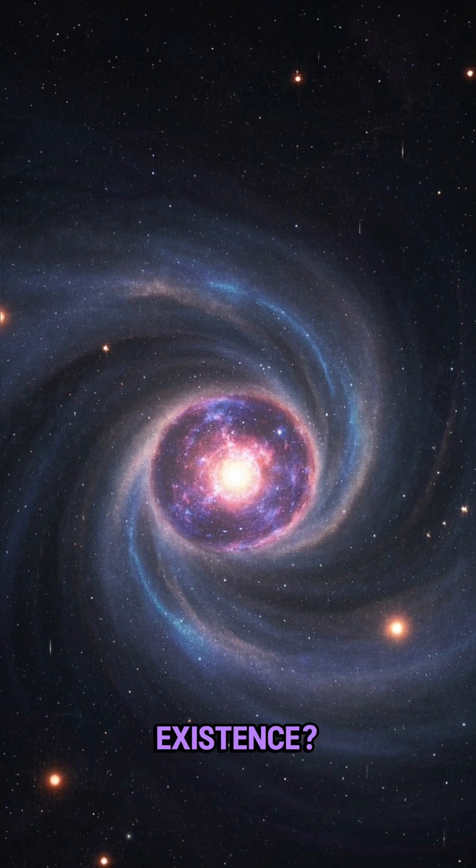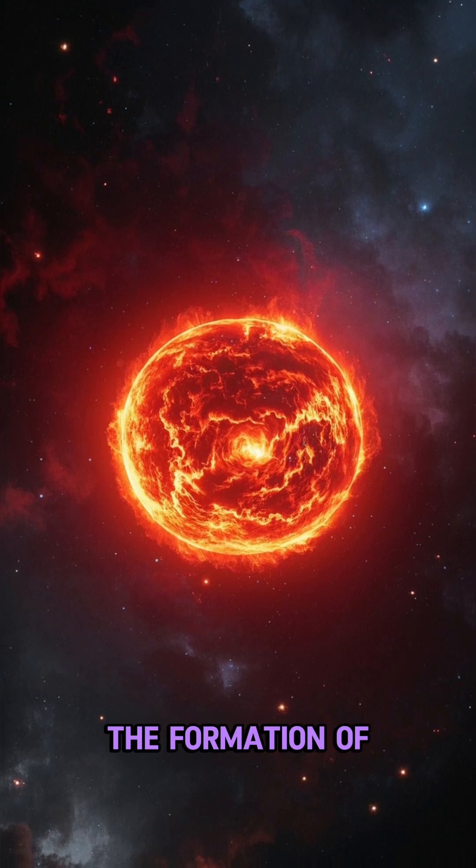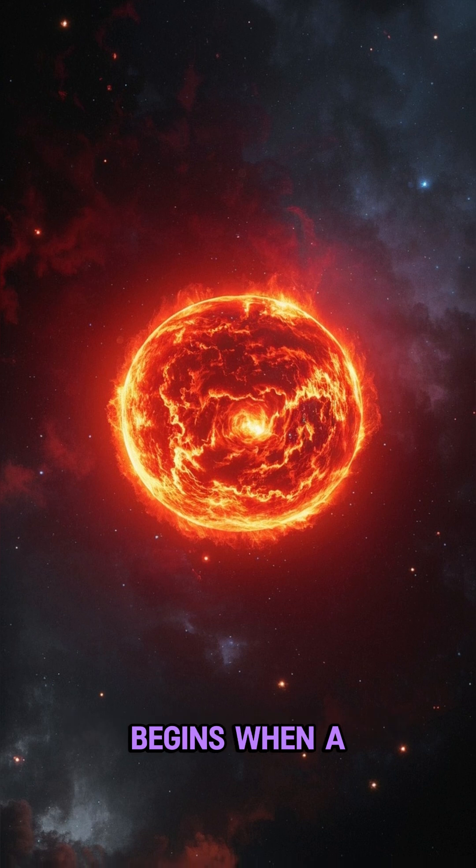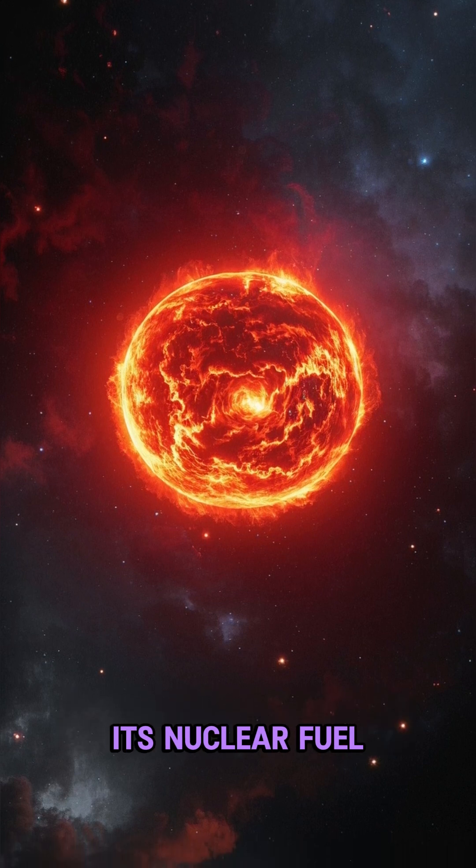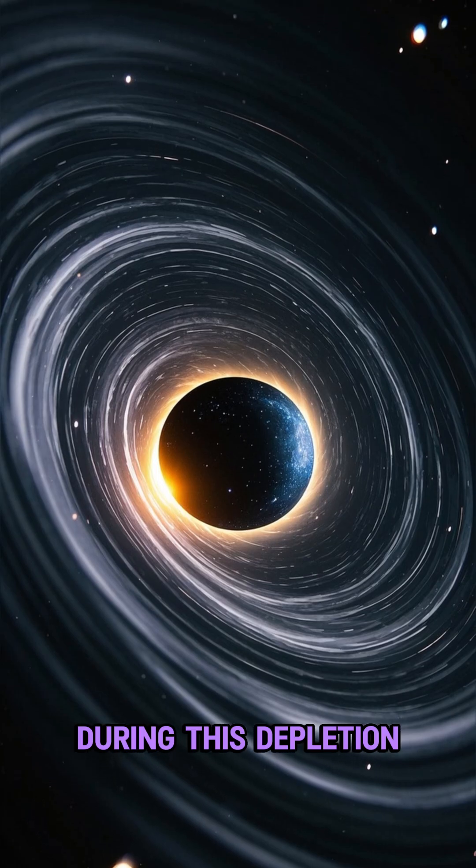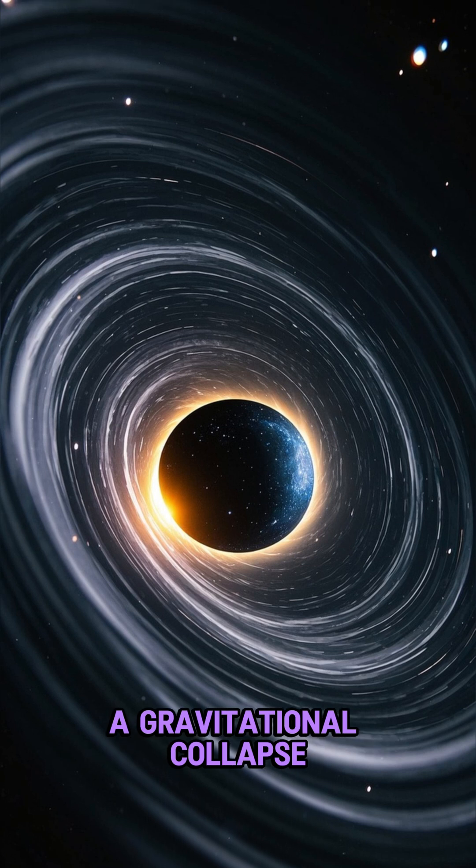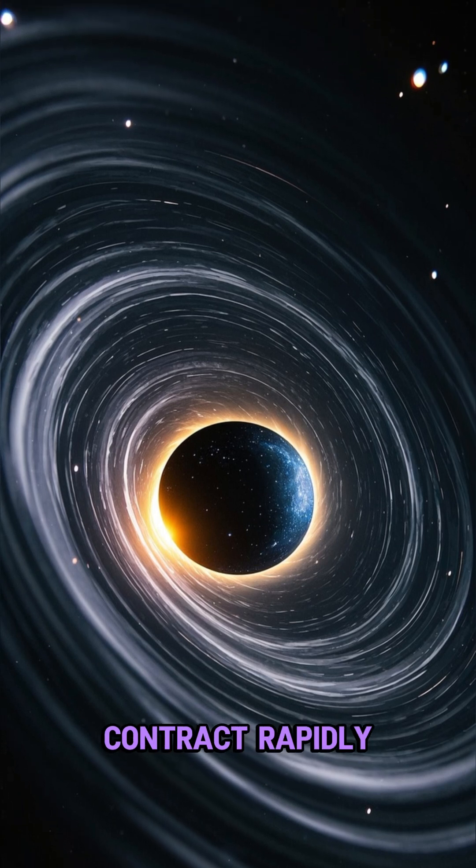How do black holes come into existence? The formation of black holes typically begins when a massive star exhausts its nuclear fuel. During this depletion, the star experiences a gravitational collapse, causing it to contract rapidly.